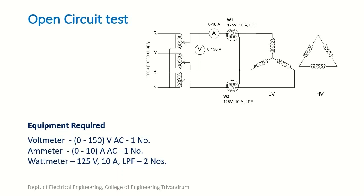The no-load current I0 will be around 10–20% of the rated current on the LV side. The rated current on the LV side is 37.65 amperes, and 10–20% of that will come around 10.5 ampere, so the next higher range, that is 0–10 ampere, is chosen. The wattmeter will be a combination of 125 volt and 10 ampere. Since it is a no-load condition and the power factor is low, we will choose an LPF wattmeter.